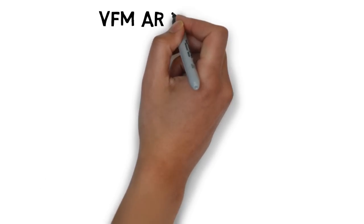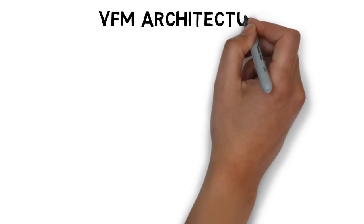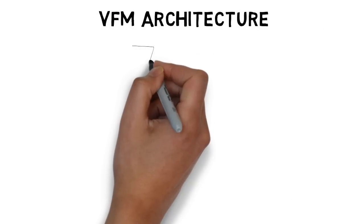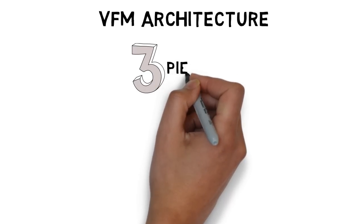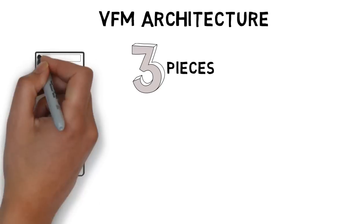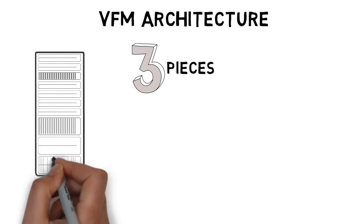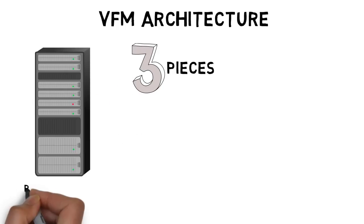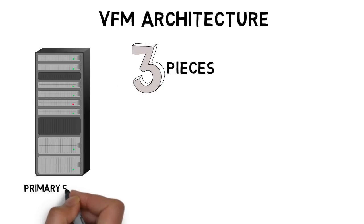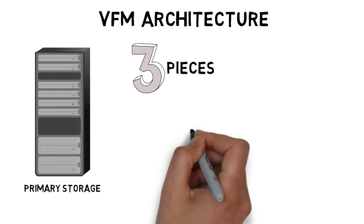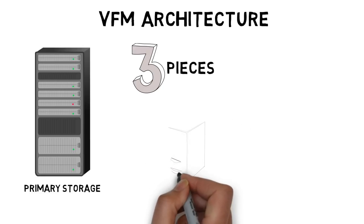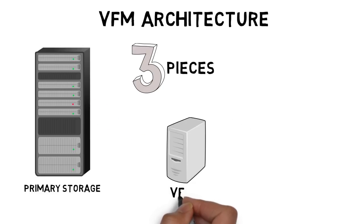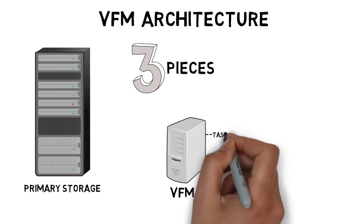Before we get to that, we should talk a little bit about architecture. VFM is architected with three main pieces. The first is the task service, which is responsible for all rehydration of data back to the primary tier as well as all tiering of information off to a secondary tier. It also has the responsibility of crawling the primary tier to find files that meet the policies set forth inside the policy engine.